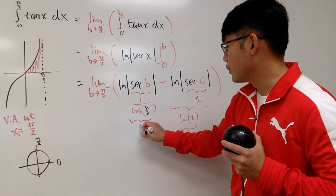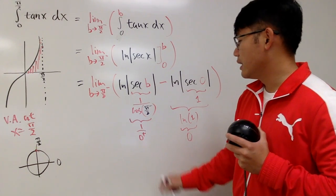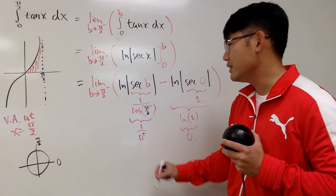So, I will just write this down. This is 1 over 0 plus. In another word, this is going to be positive infinity.